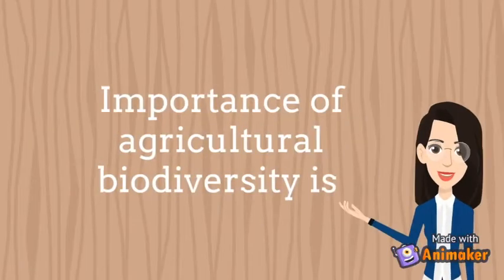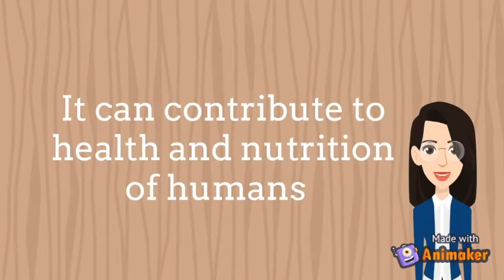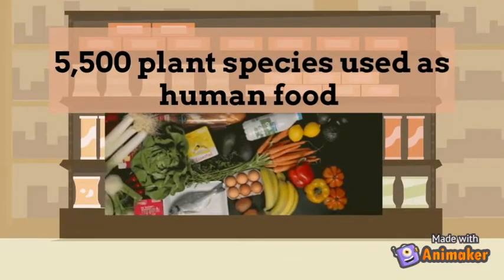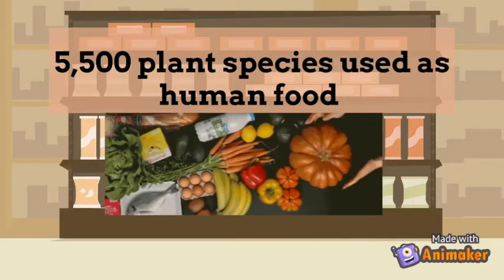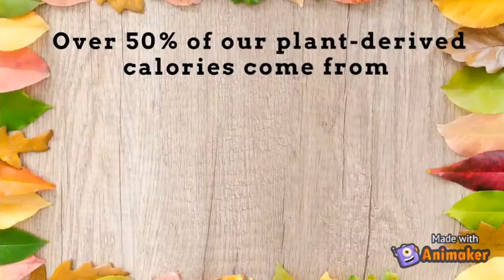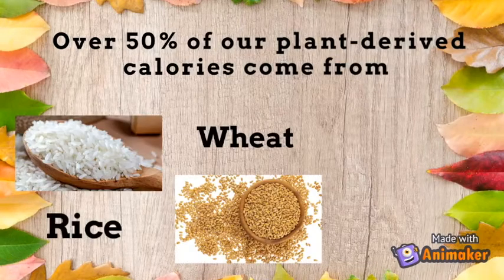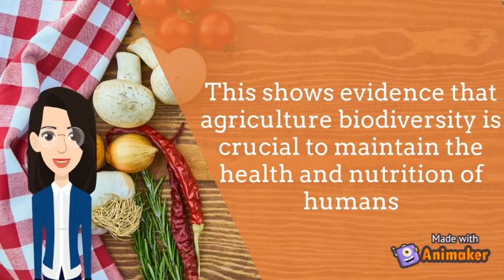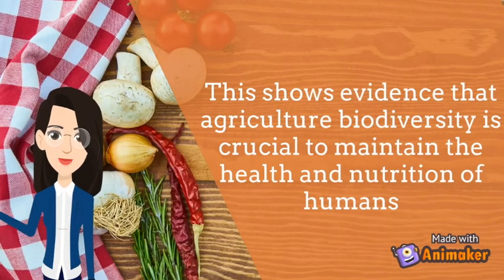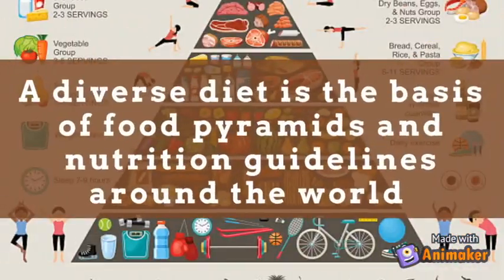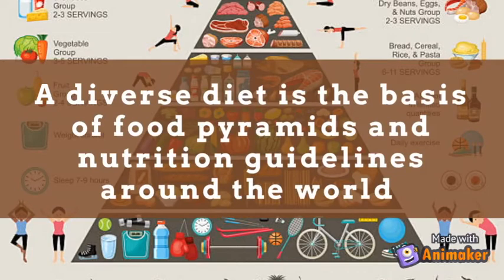The importance of agricultural biodiversity is that it can contribute to the health and nutrition of humans. This can be shown as 5,500 plant species are used as human food and over 50% of our plant-derived calories come from rice, wheat and maize. This shows that agricultural biodiversity is crucial to maintain human health and nutrition, and a diverse diet is the basis of food pyramids and nutrition guidelines around the world.